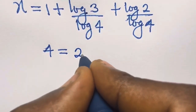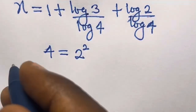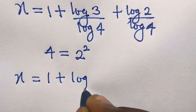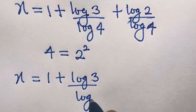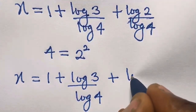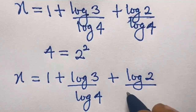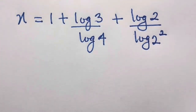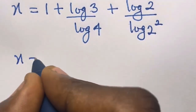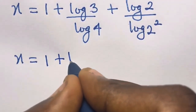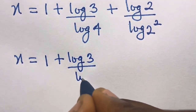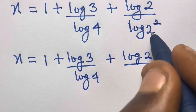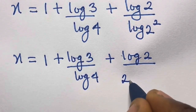We know that 4 equals 2 raised to the power 2. So the expression becomes x equals 1 plus log 3 divided by log 4, plus log 2 divided by log(2 raised to the power 2). Using the power rule, the exponent comes forward, giving us 2·log 2.